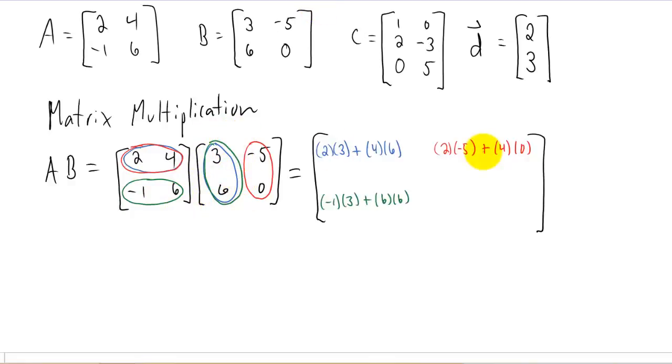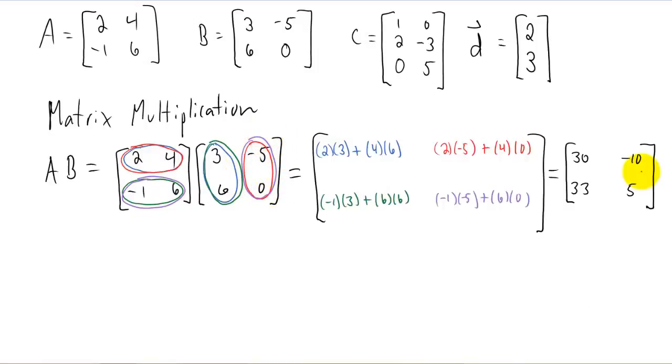And finally, to get our 2, 2 element of our A, B matrix, we're going to do a dot product of the second column of A with the second column of B. And I think if you add all this stuff up here, you get this A, B matrix right here.